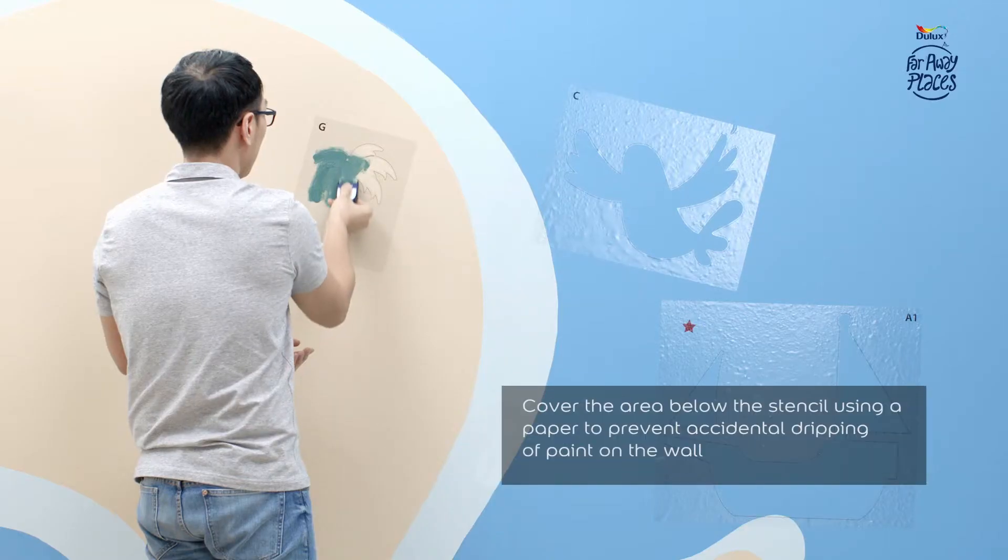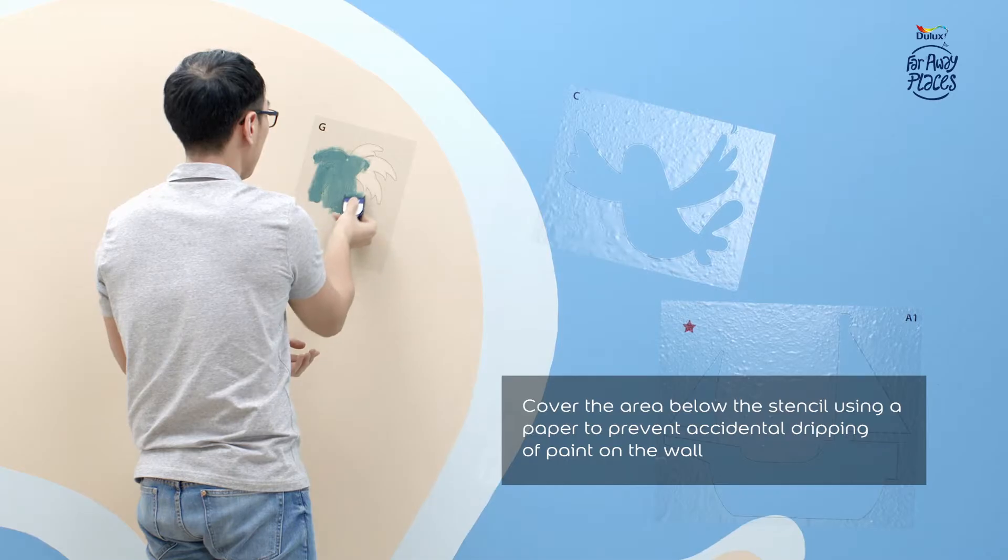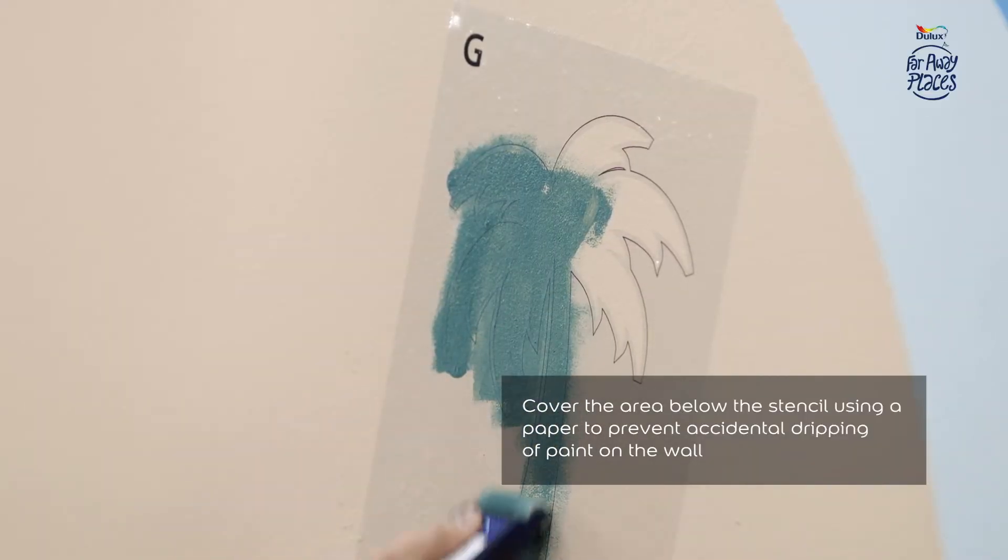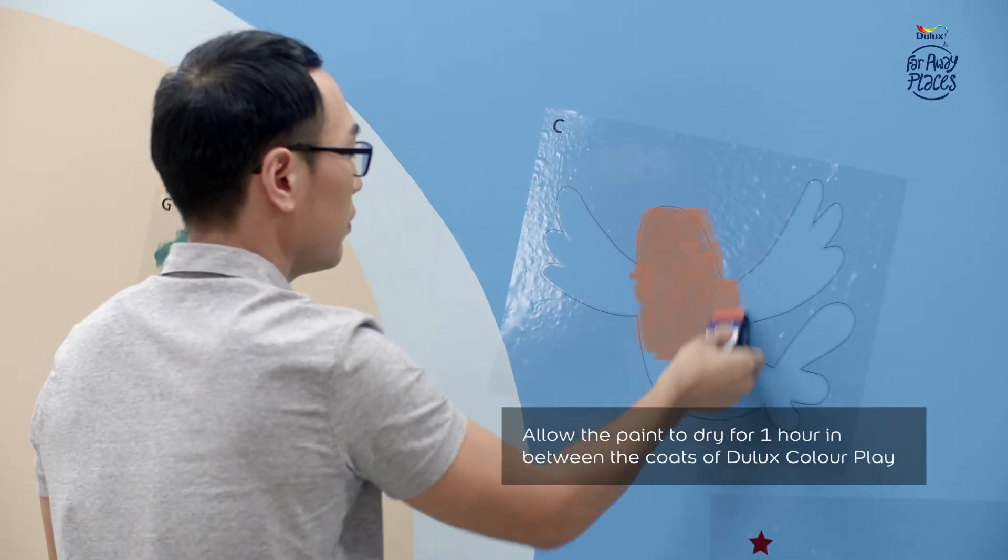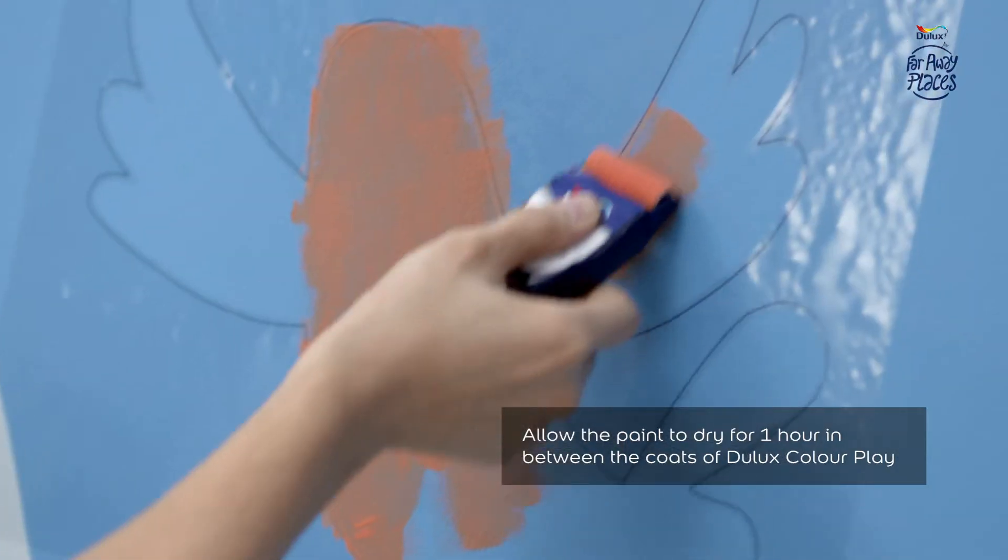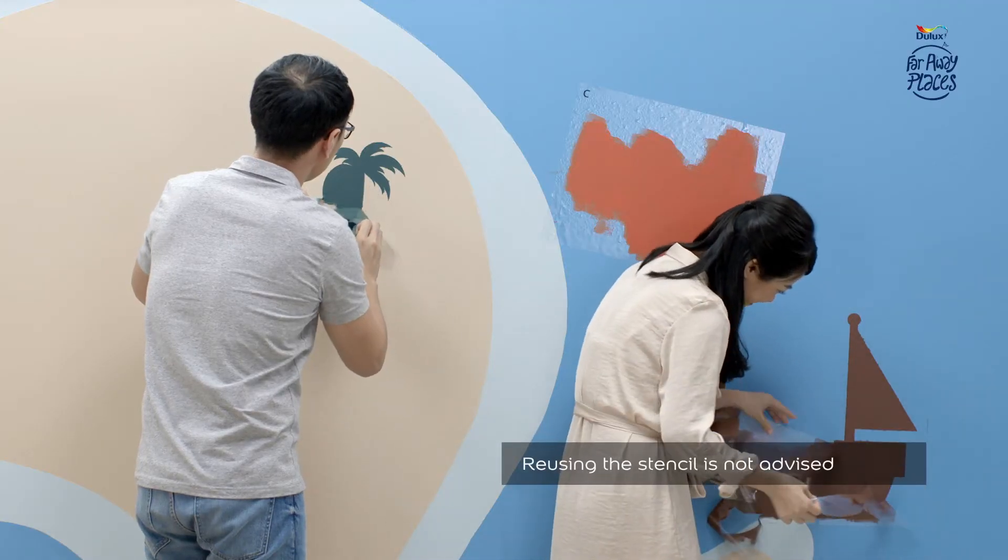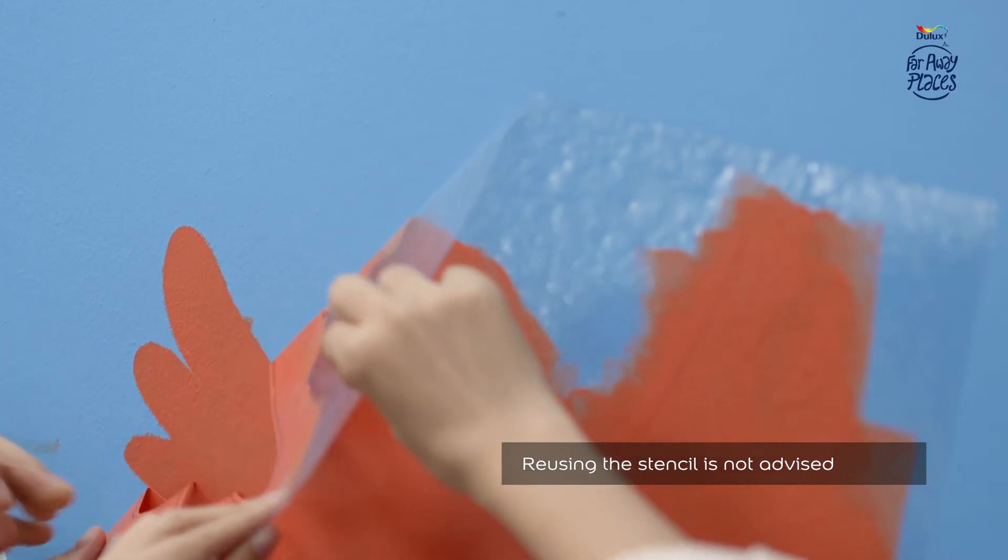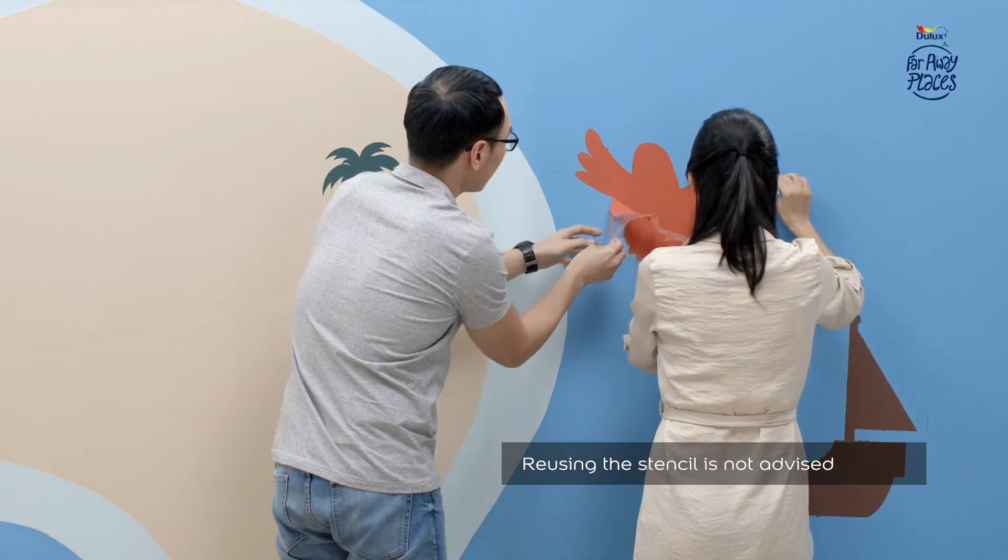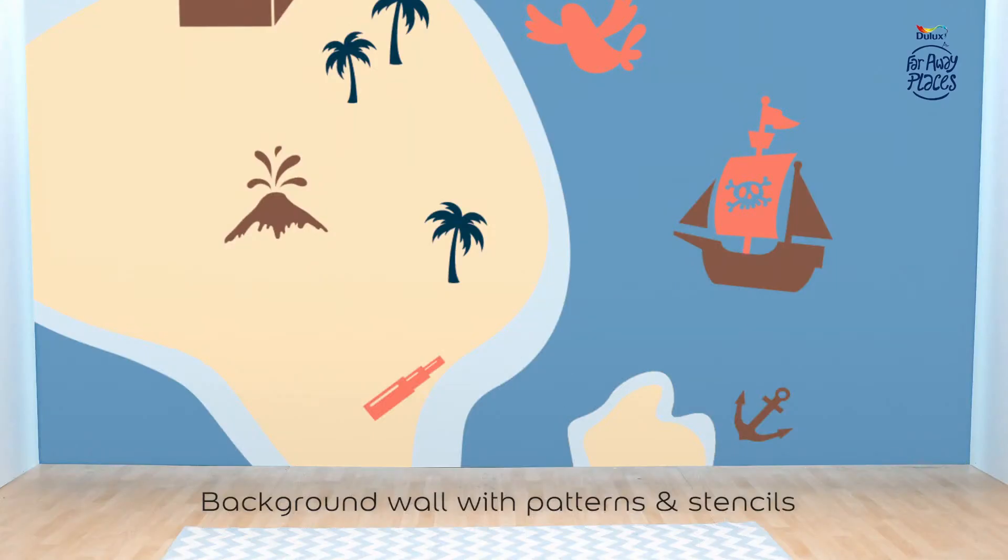Start applying the color on the stencil. Two to three coats are recommended to achieve the desired opacity. Repeat the process for the other stencils. Once painted to desired opacity, peel the stencil off carefully. Step 3 is now complete.